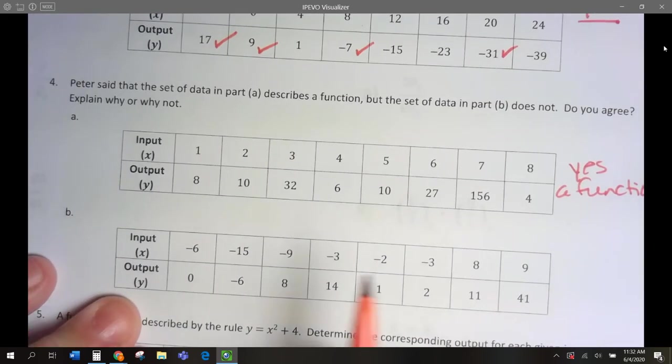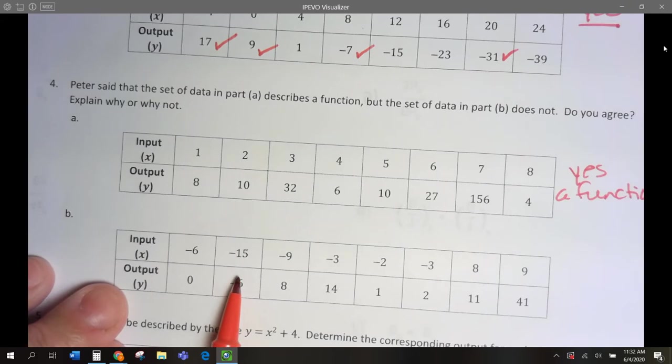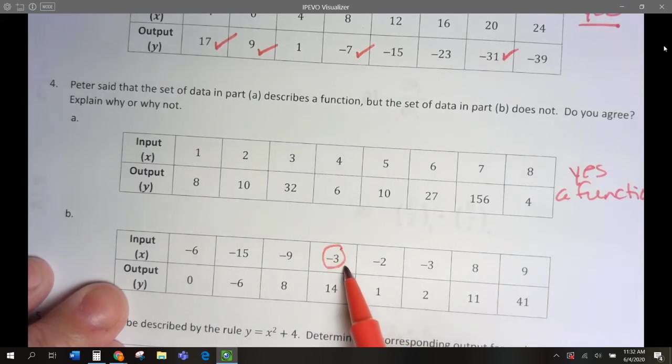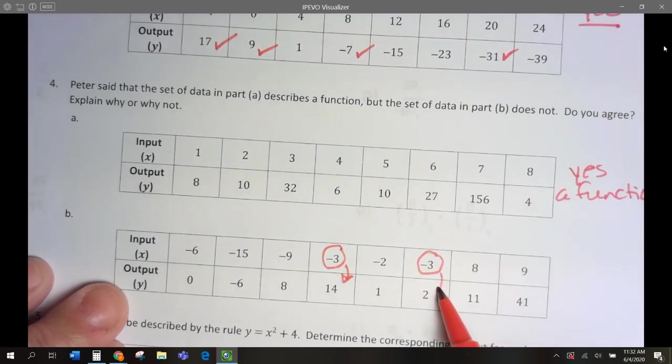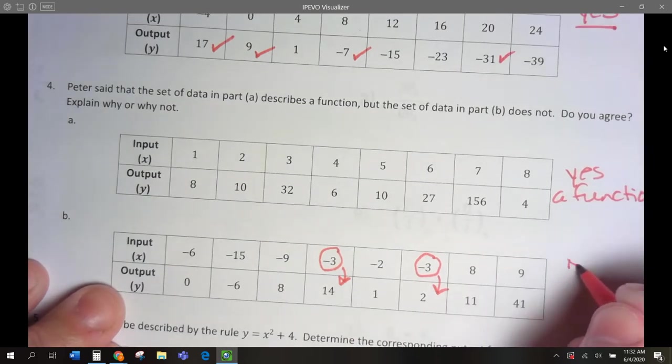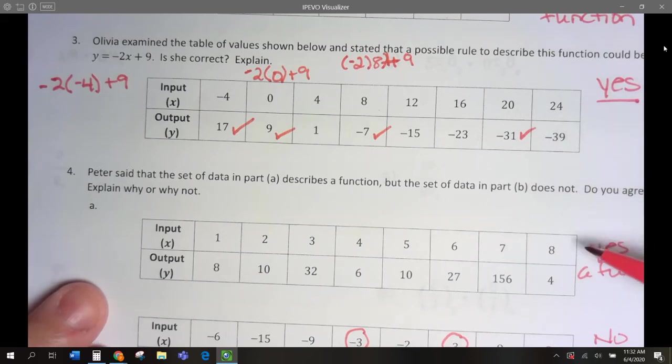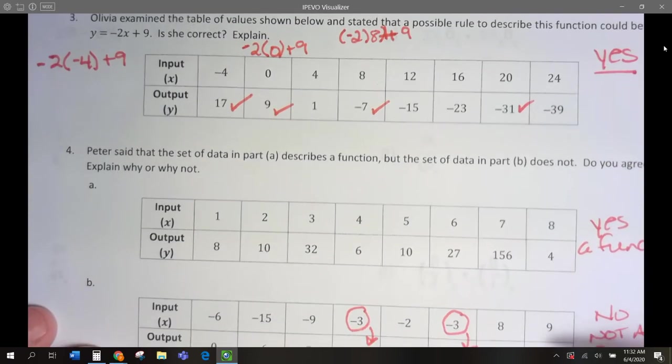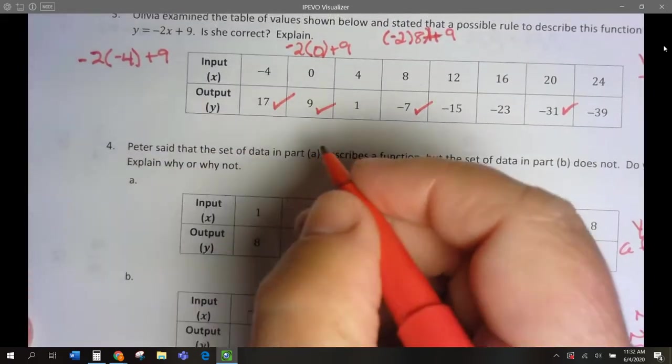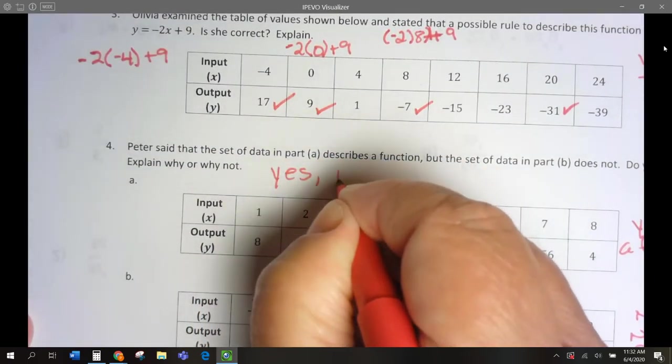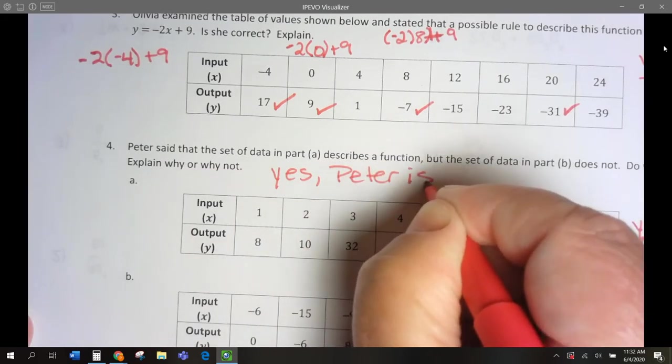And let's look at this one. Negative 6, negative 15 gets us negative 9. Negative 3. Negative 2. Look it, sometimes negative 3 gives us 14, sometimes negative 3 gives us 2. So one input with two different outputs. So no, not a function. And our question asks, Peter says that A is a function and B is not. Do we agree? Yeah, because we said this is a function, this is not. So yes, Peter is correct.